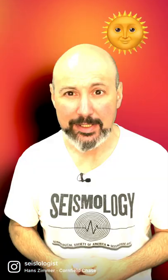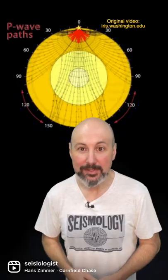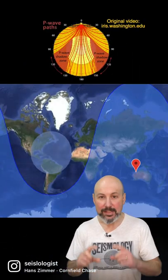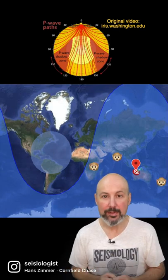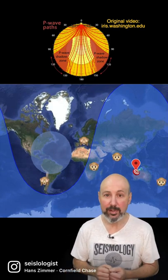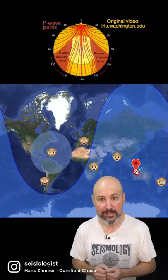Did you know that earthquakes have a shadow? But they're not cast by the sun, but by the liquid core of the Earth. Pulsing primary P waves are diffracted when they hit the outer core, so there's a band around the opposite side of the Earth where seismographs don't see these signals.